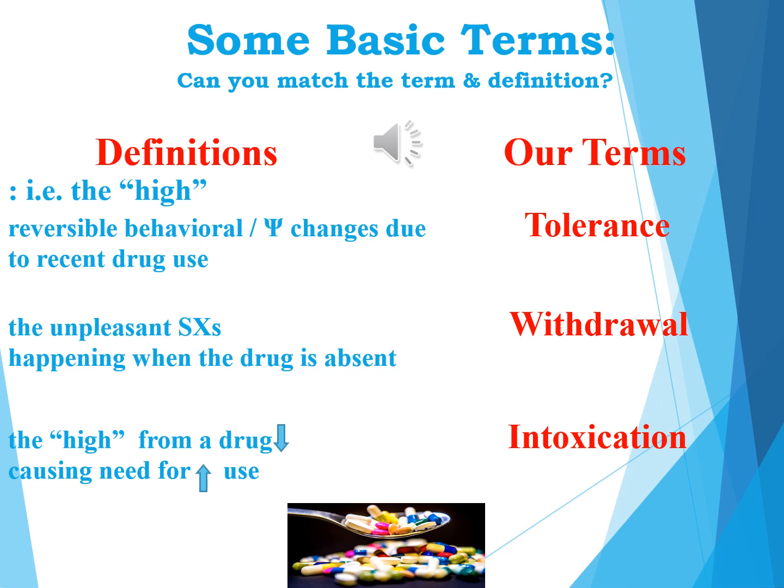Let's consider three basic terms associated with our chapter. Intoxication — briefly, it's the high of the drug. It involves reversible behavioral or psychological changes due to recent drug use. Withdrawal is an unpleasant combination of symptoms, physical or psychological. Basically the brain has come to expect and need the drug, and these symptoms appear when the drug is not present in sufficient quantities.